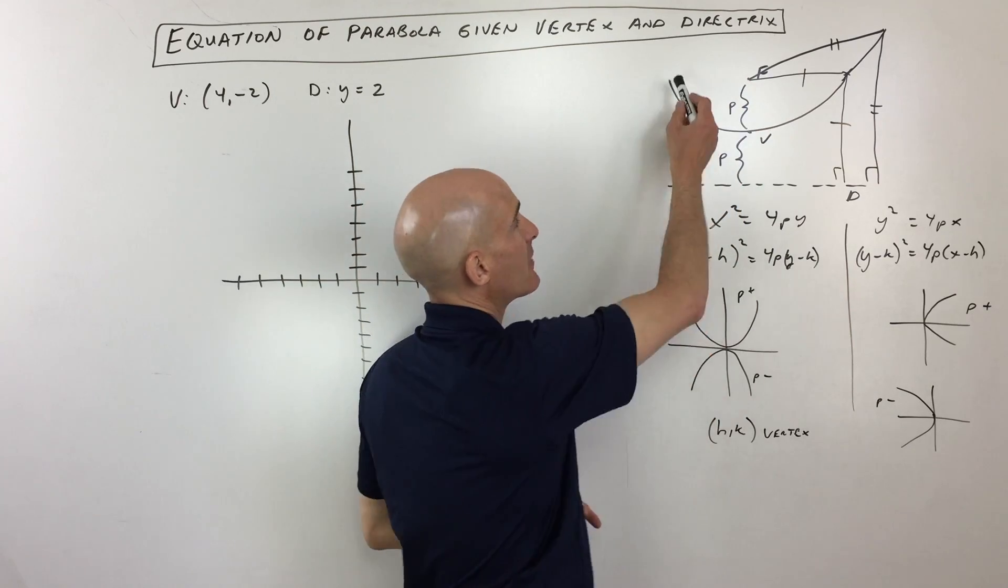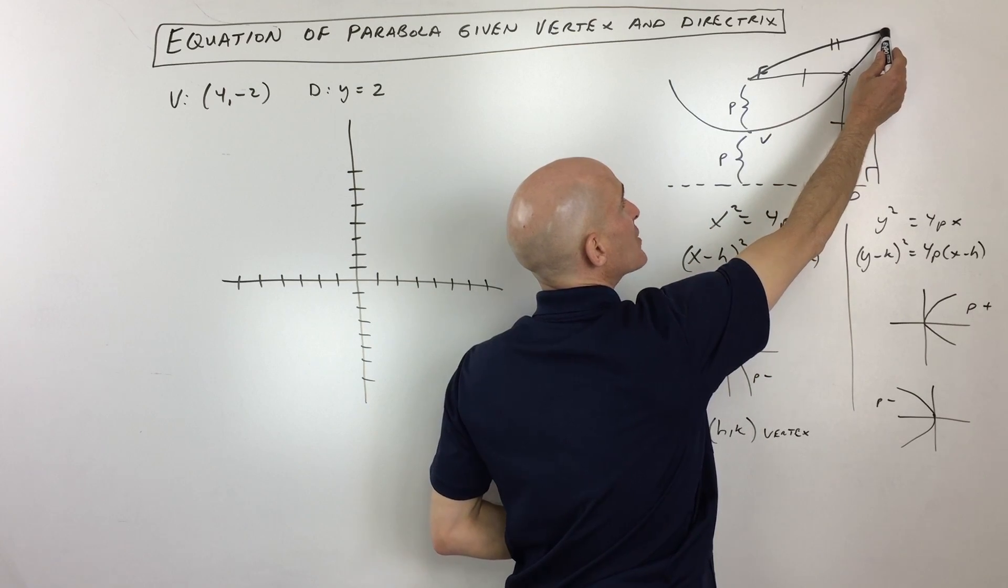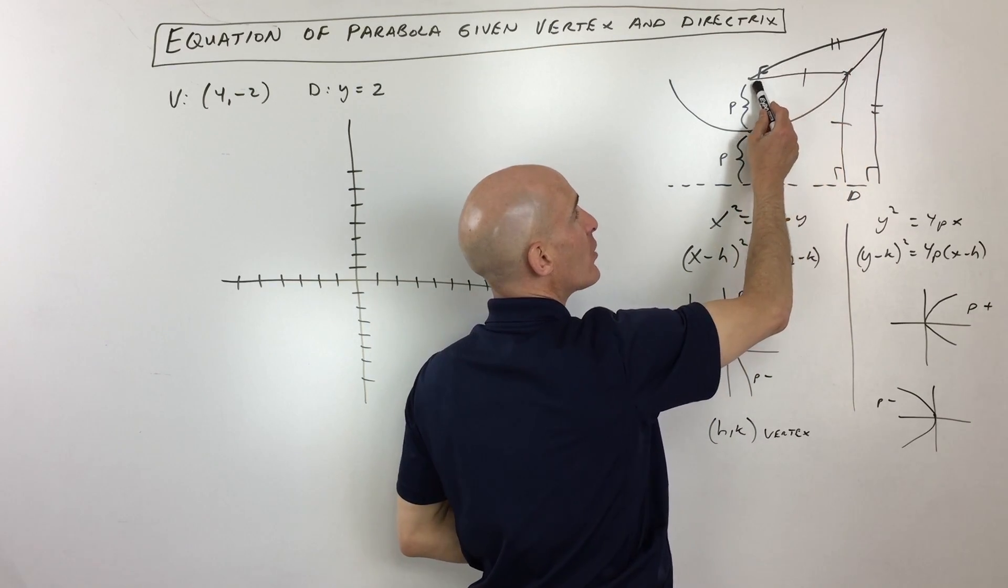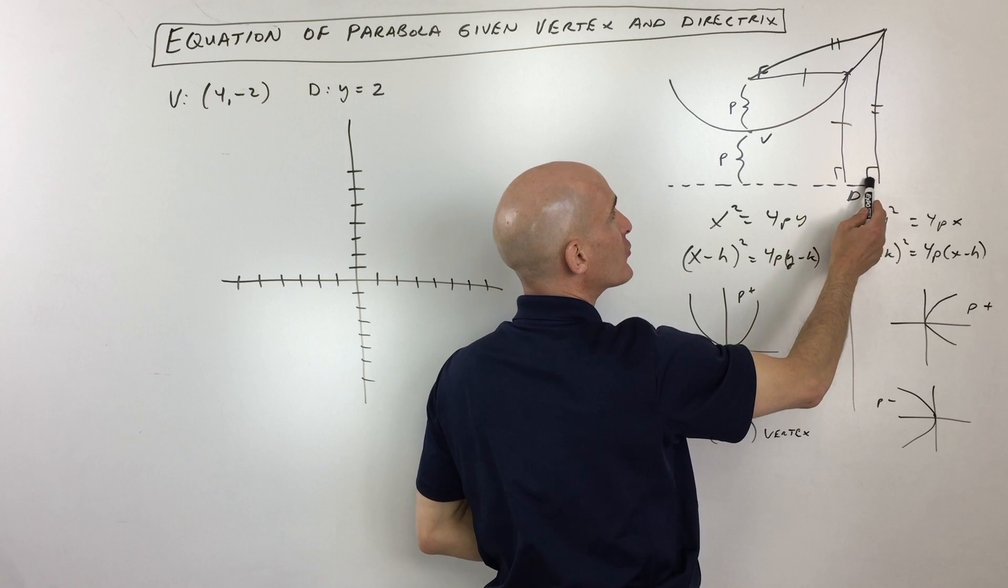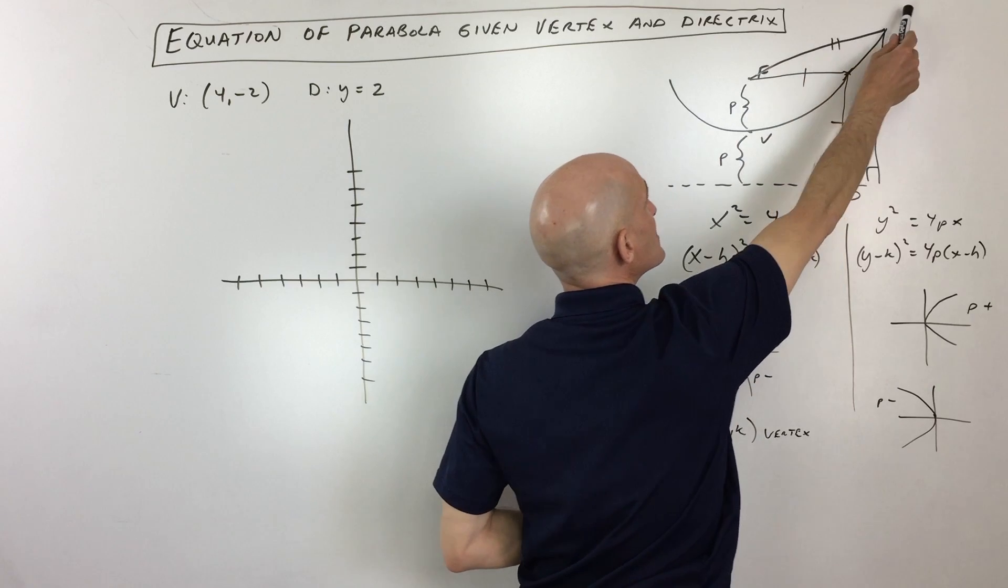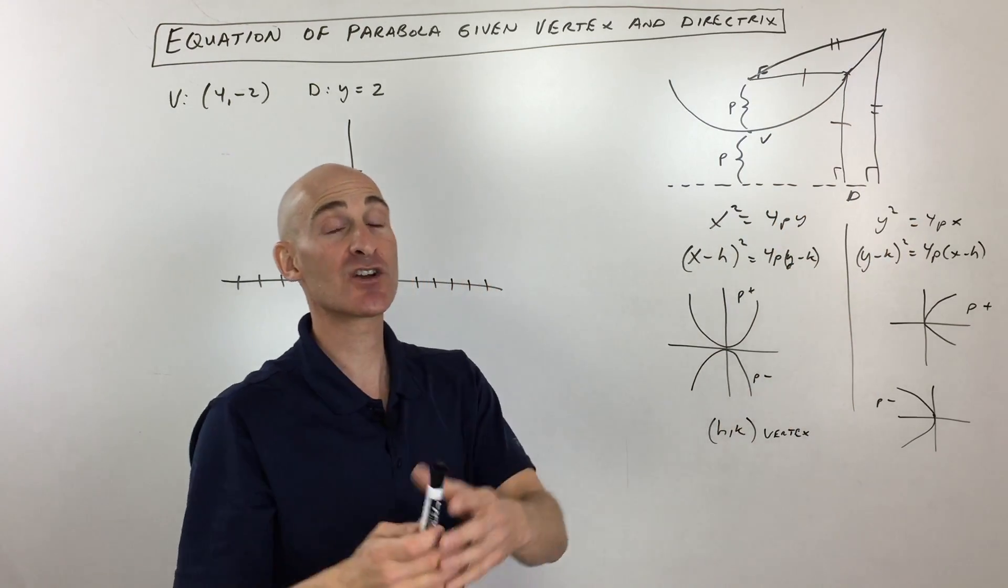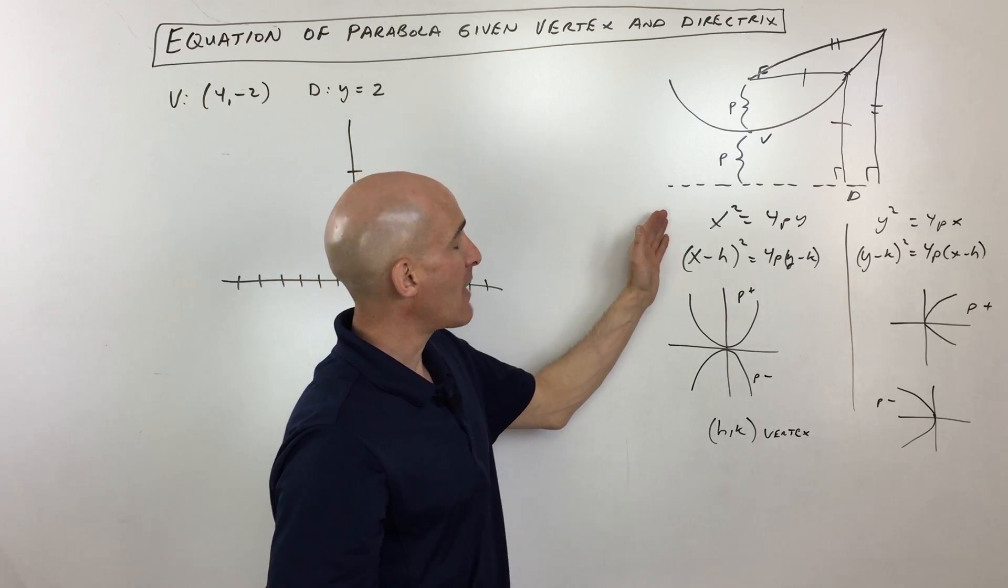Basically what a parabola is, it's the set of all points such that any point on this parabola is going to be the same distance between a given point called the focus and a given line called the directrix. So you can see as you go further out on this parabola, the distance to the focus is getting longer. So is the distance to the directrix, but those distances are going to be the same.